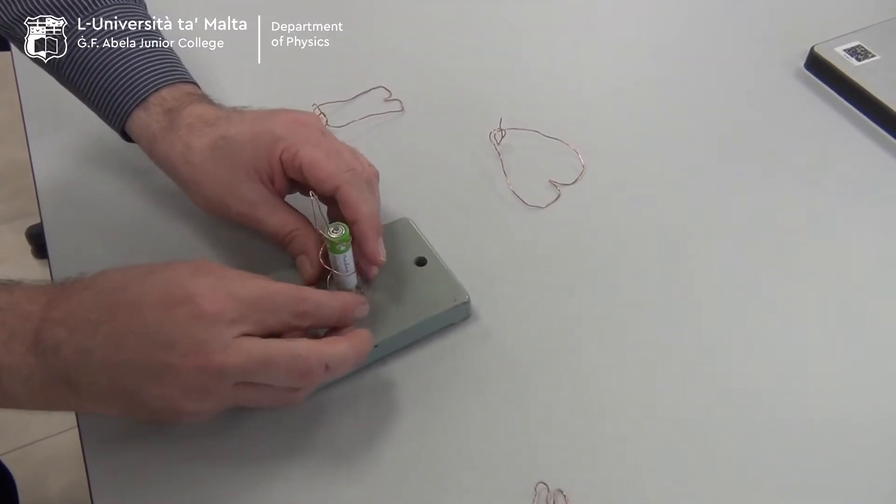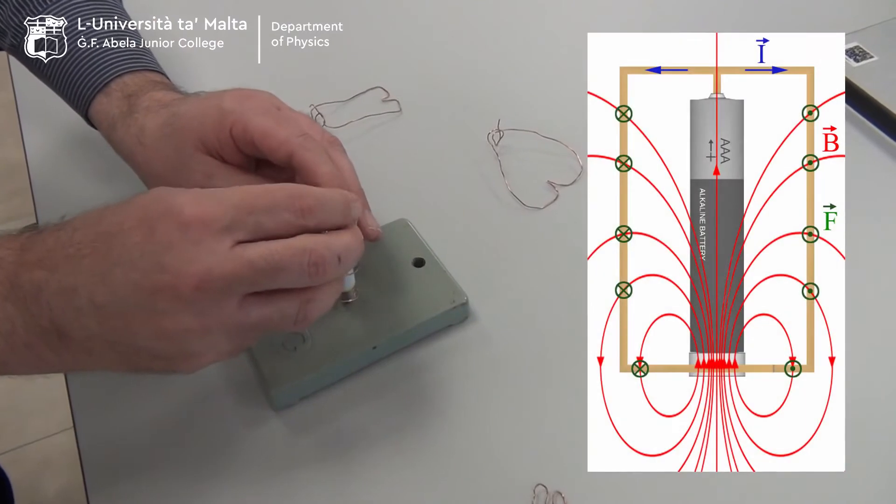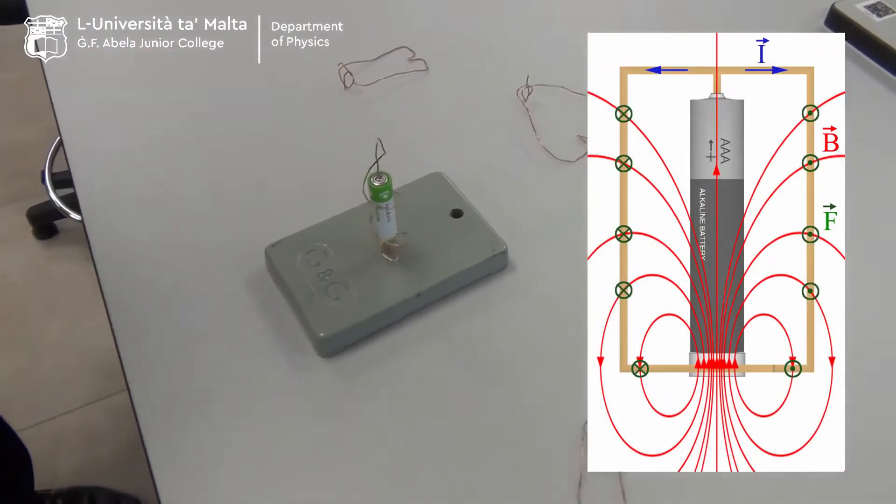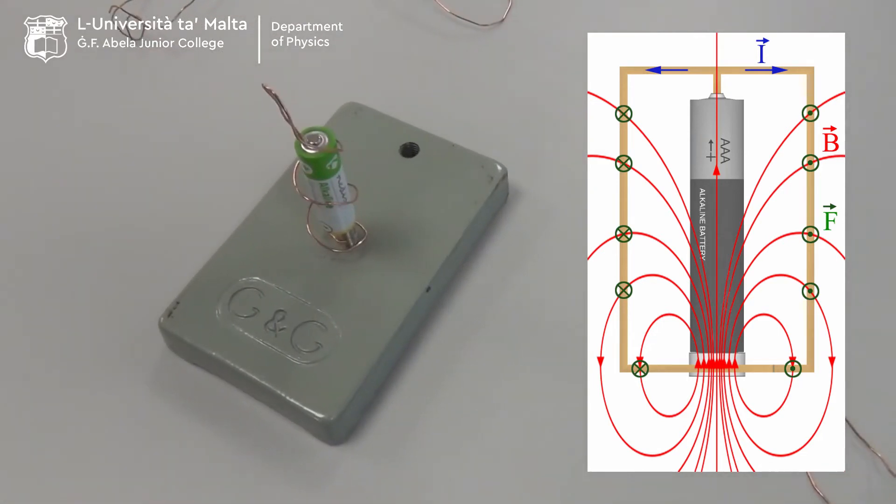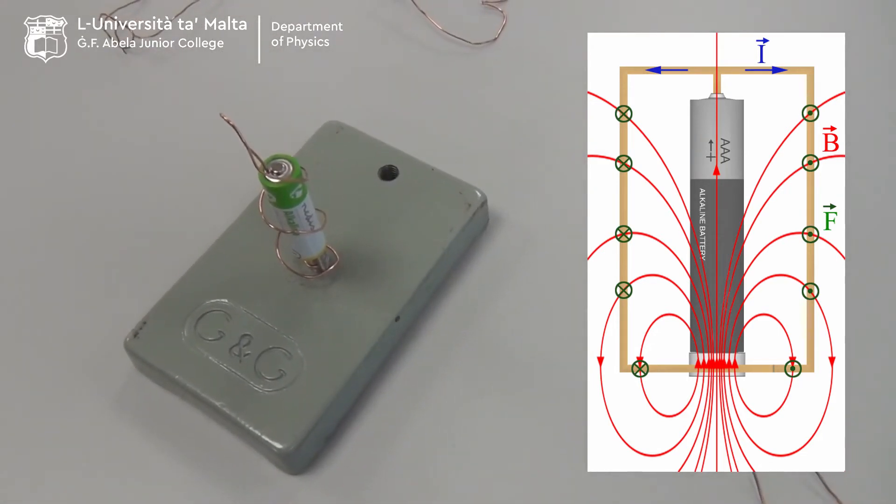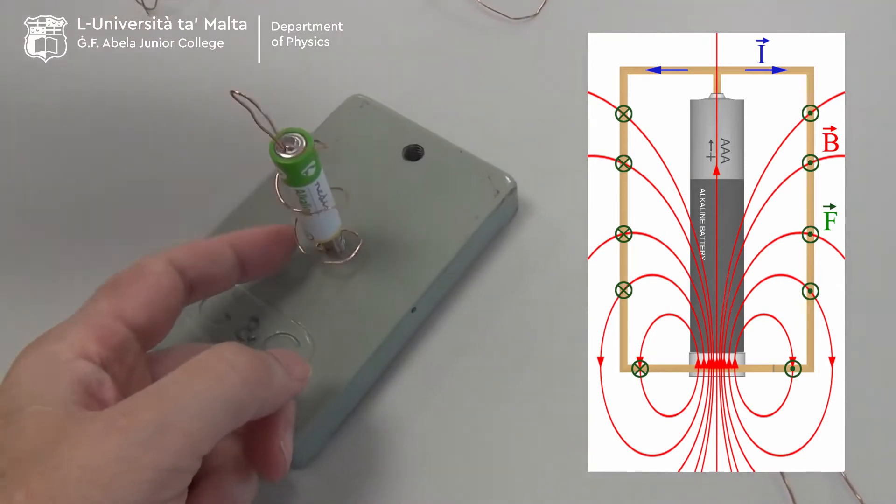As current flows in the loop, the current creates a magnetic effect, magnetism, and that magnetism will interact with the magnets below and it starts to rotate.